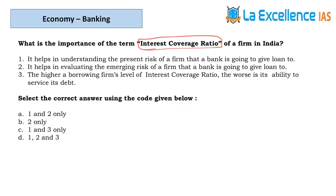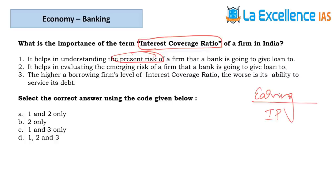The next question is about Interest Coverage Ratio (ICR). ICR is calculated by dividing a company's earnings before interest payment by the company's interest payment due. Statement 1 — it helps understand present risk of a firm going to receive a loan; yes, if I know earnings versus interest due, I can assess repayment ability and risk. Statement 2 — helps evaluate emerging risk of a firm; yes, if earnings are decreasing, emerging risk is identified. Eliminate option after confirming both are correct.